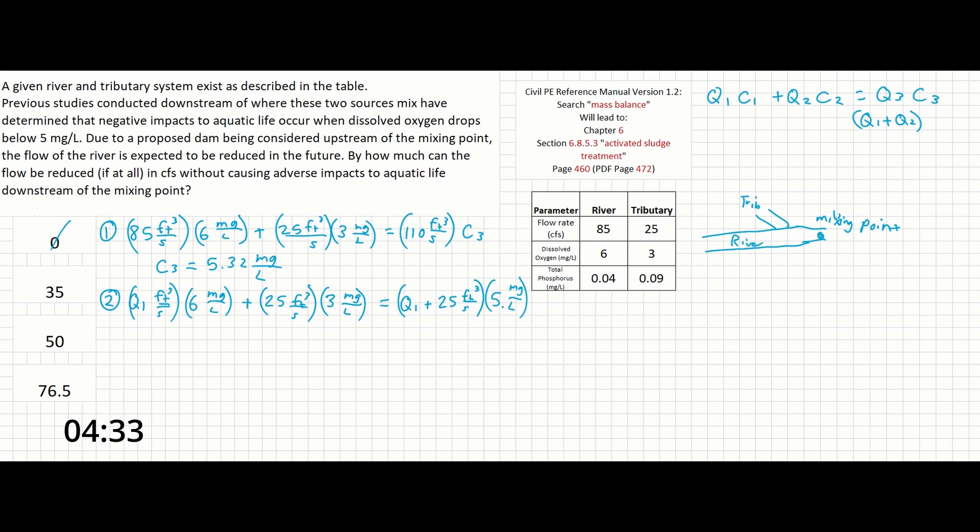Solving this out we're going to get 6Q1, I'm going to ignore units for simplicity's sake here, plus 75 equals 5 Q1 plus 125.